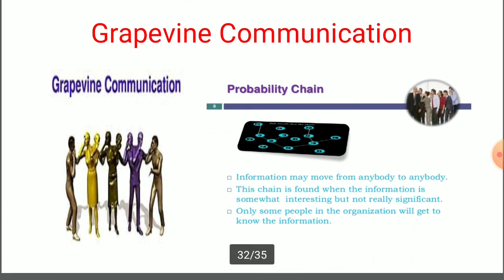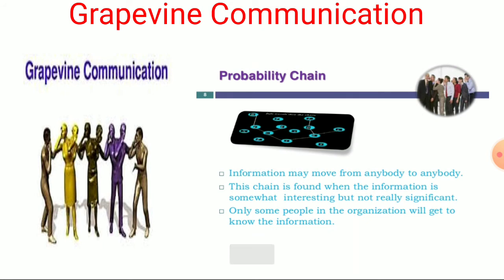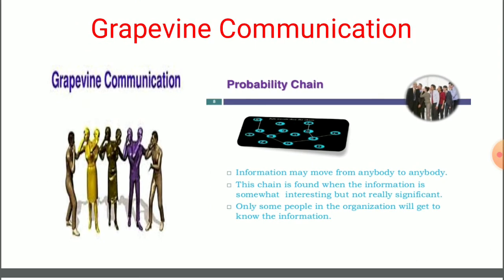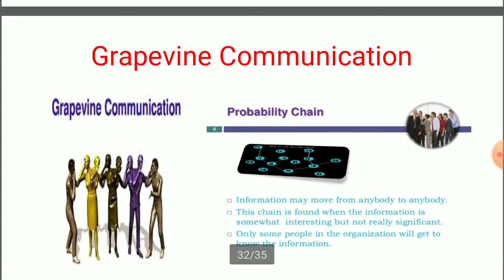Moving on to the third chain of grapevine communication — the probability chain. In this probability chain, information may move from anybody to anybody. Information can be spread from any person to any other person. This chain is found when the information is somewhat interesting but not really significant. Here, only some people in the organization will get to know the information — there is no guarantee everyone receives it. So there is a probability of getting the message or rumor from someone else, which differs from the previous two chains.